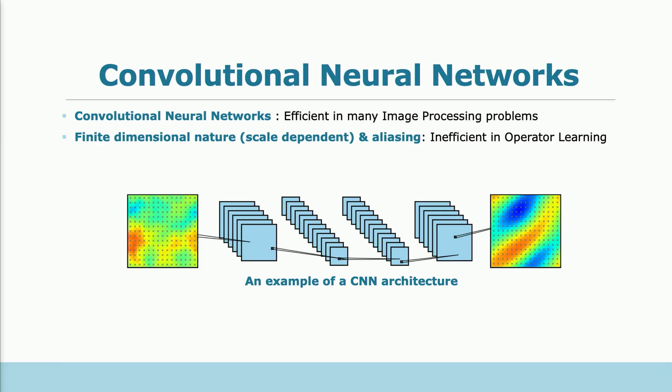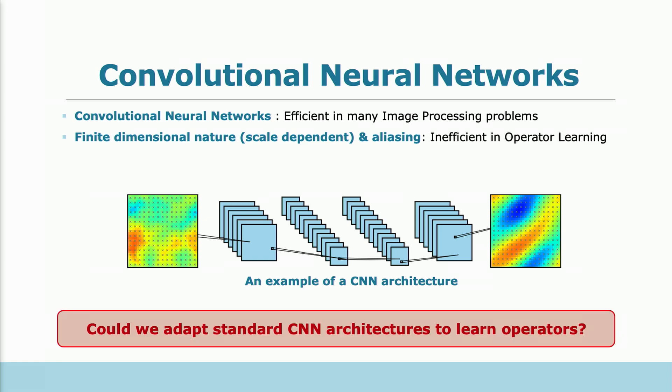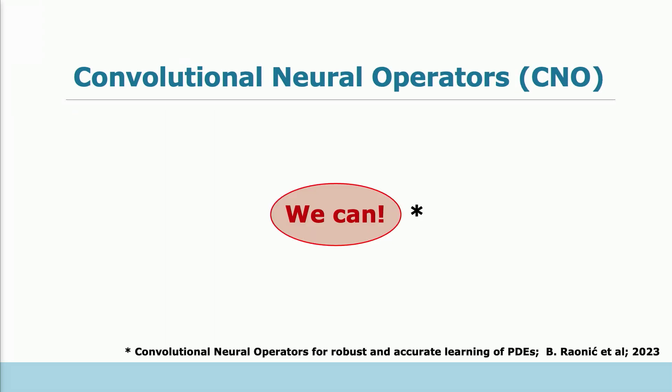There comes our convolutional neural operators. So first, in this operator learning community, people didn't use too much the convolutions because they are scale dependent and cause aliasing errors, which we can discuss in the break. But they're also very efficient in many image processing tasks, as we all know. So the question is, could we adapt standard CNNs to learn operators? And in fact, we can, and that's what we have shown in our paper.